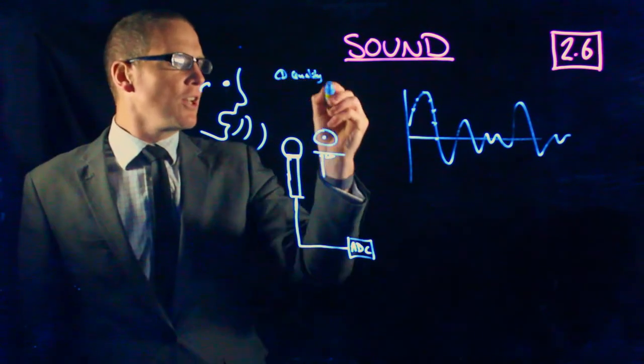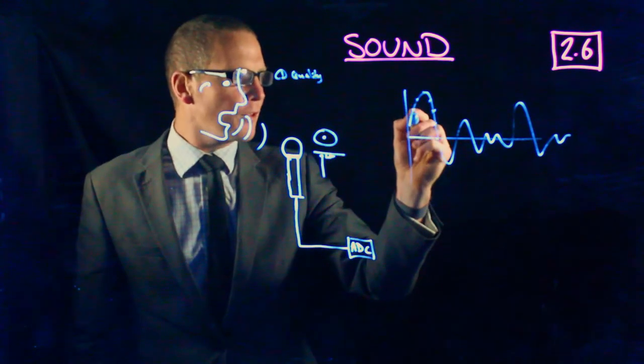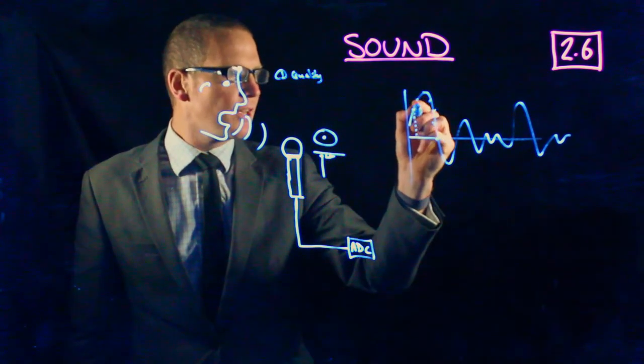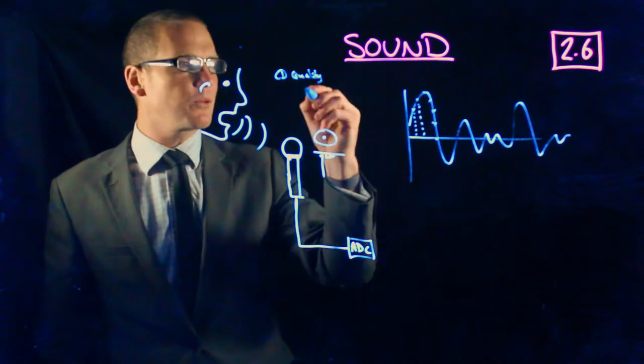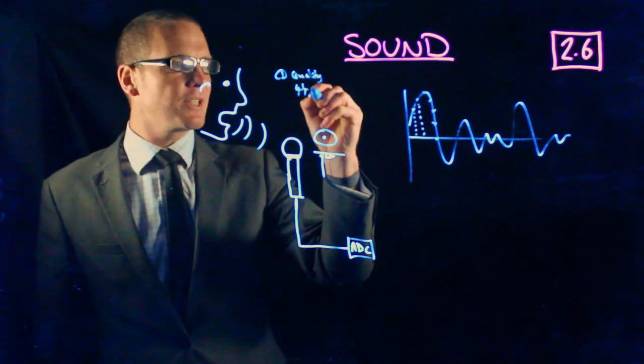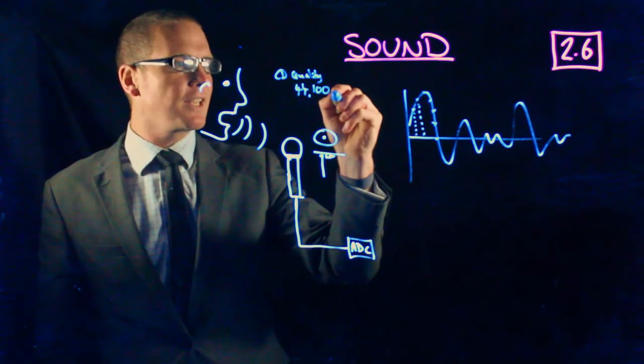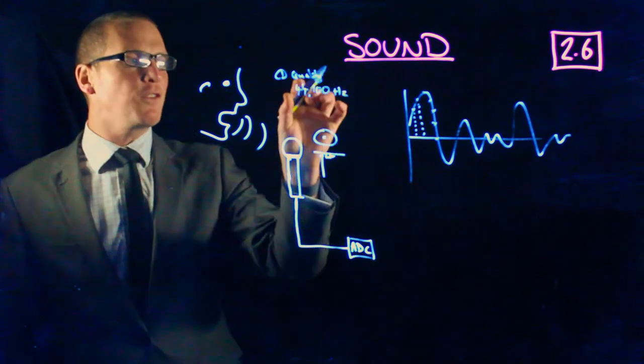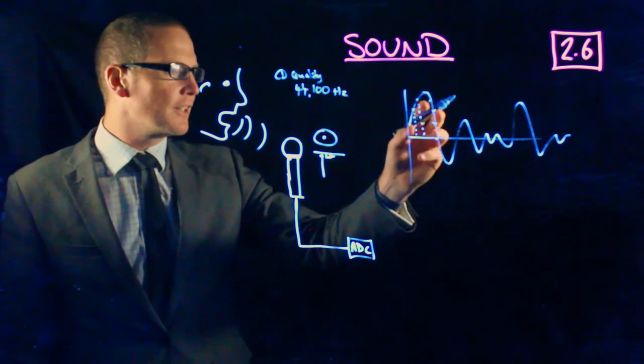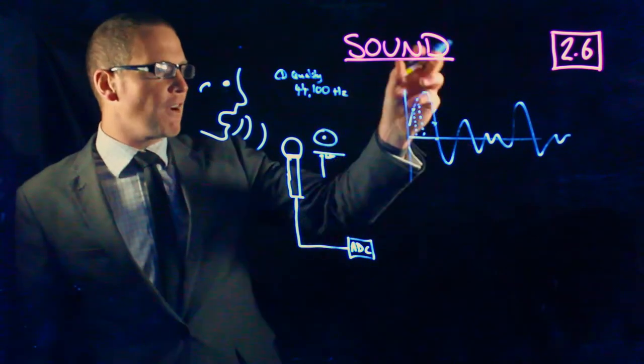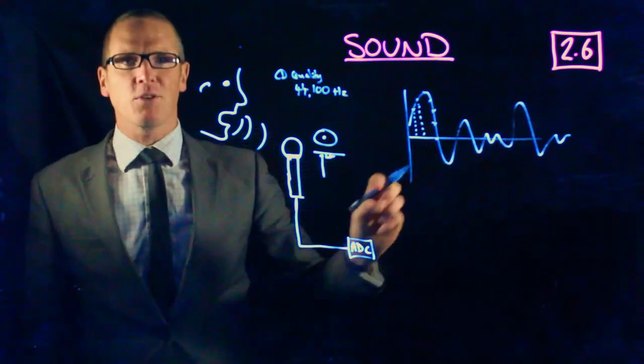...CD quality, you're looking at 44,100 measurements every single second. That's why we say 44.1 kilohertz. So 44,100 measurements every second gets stored to represent that analog sound wave.